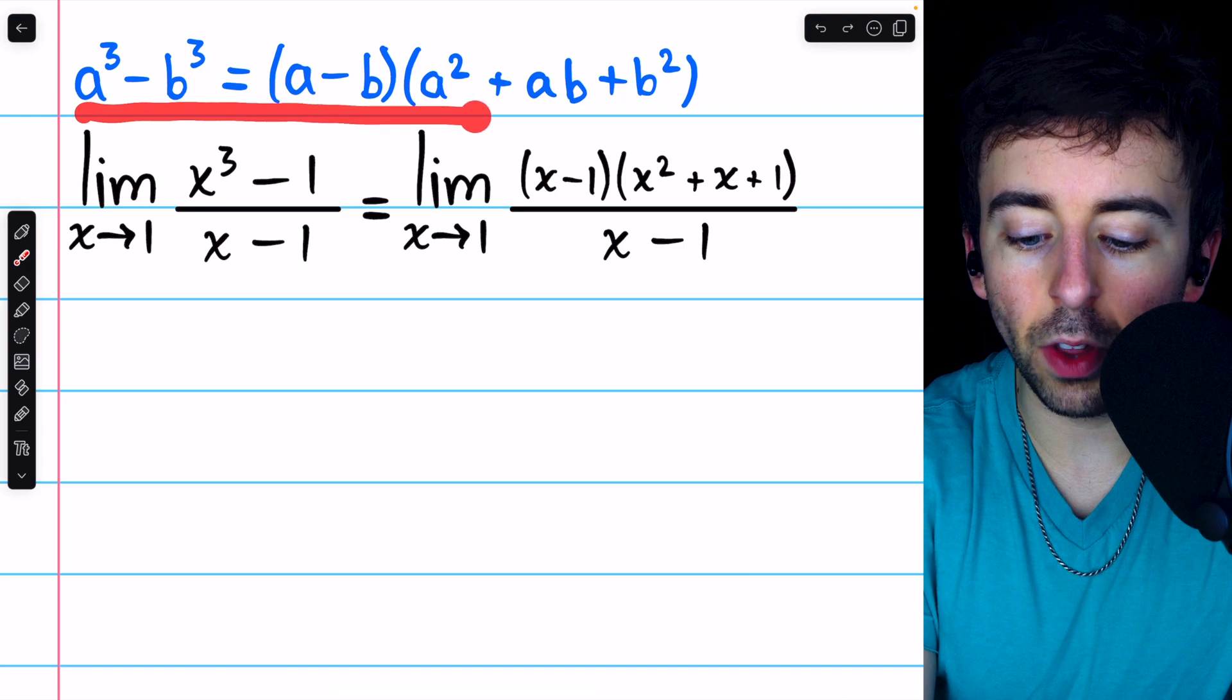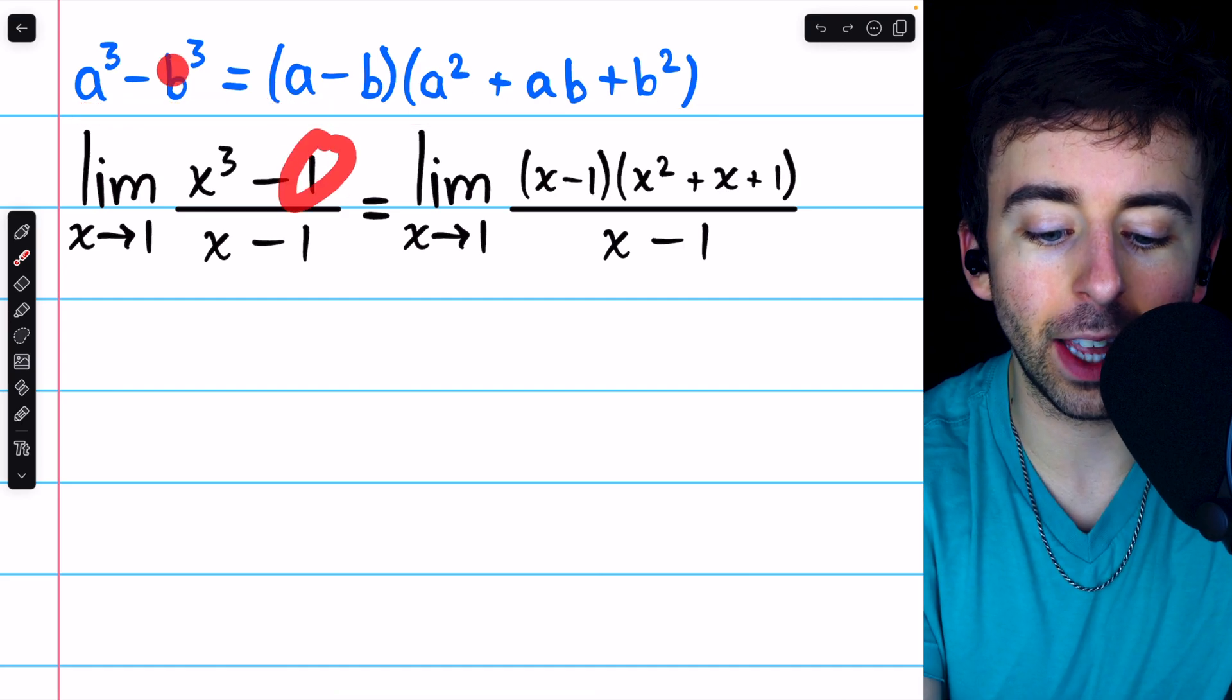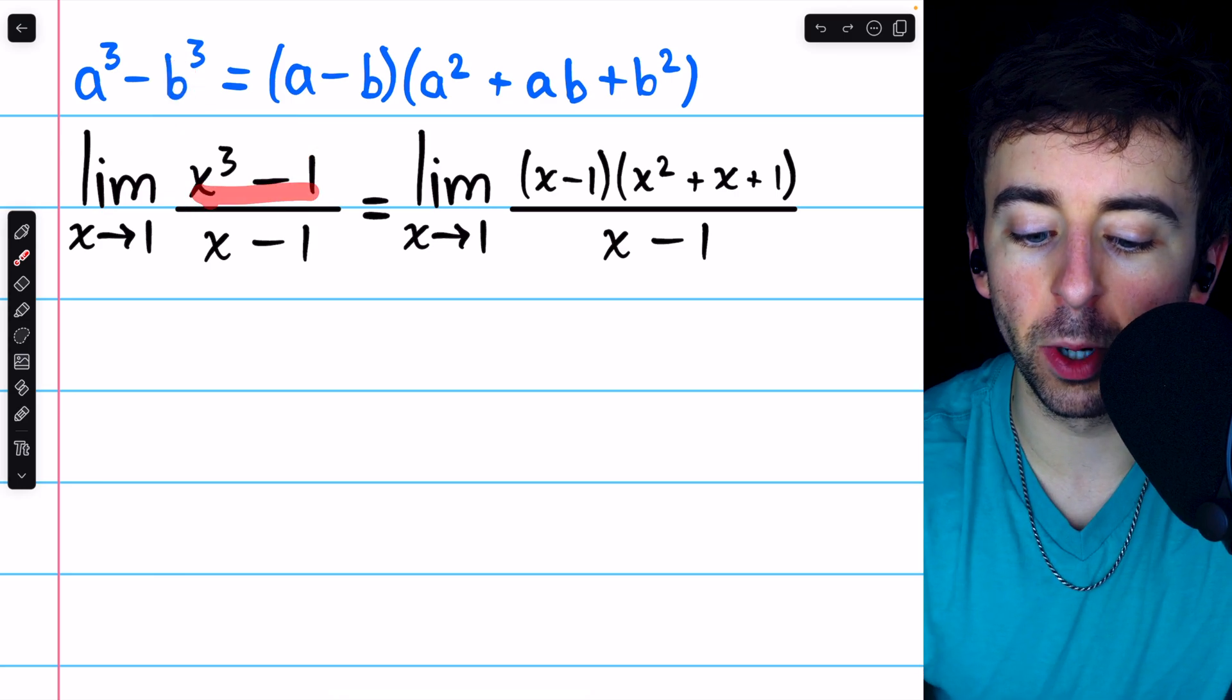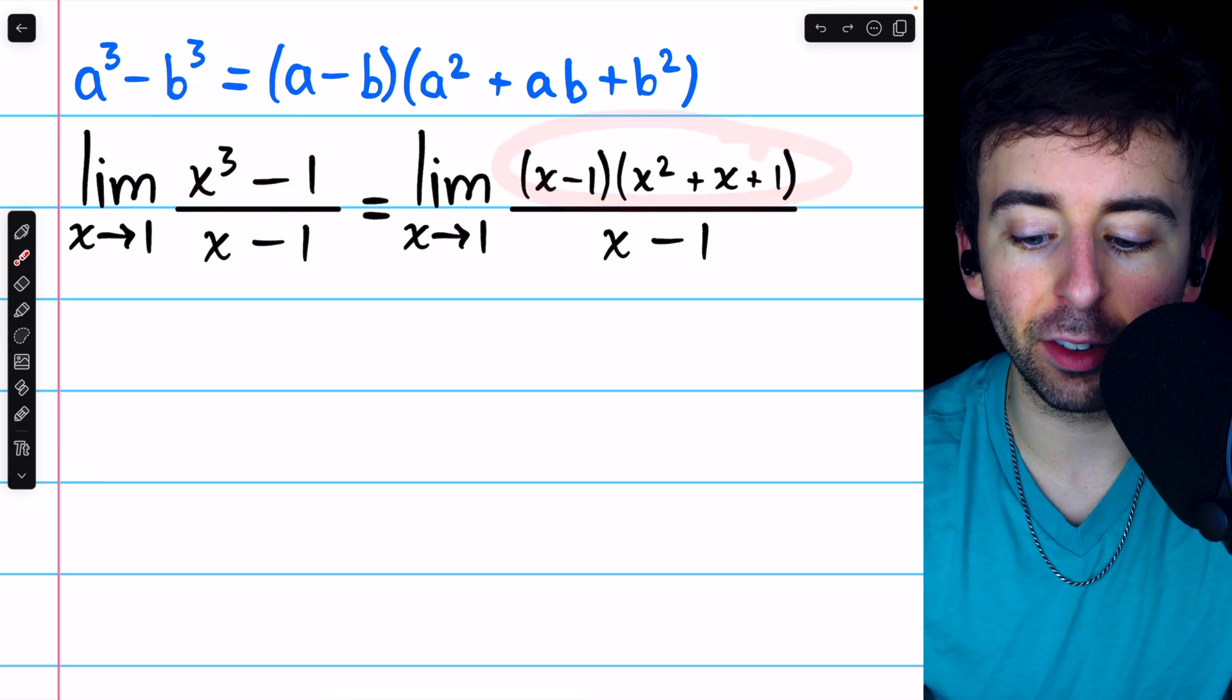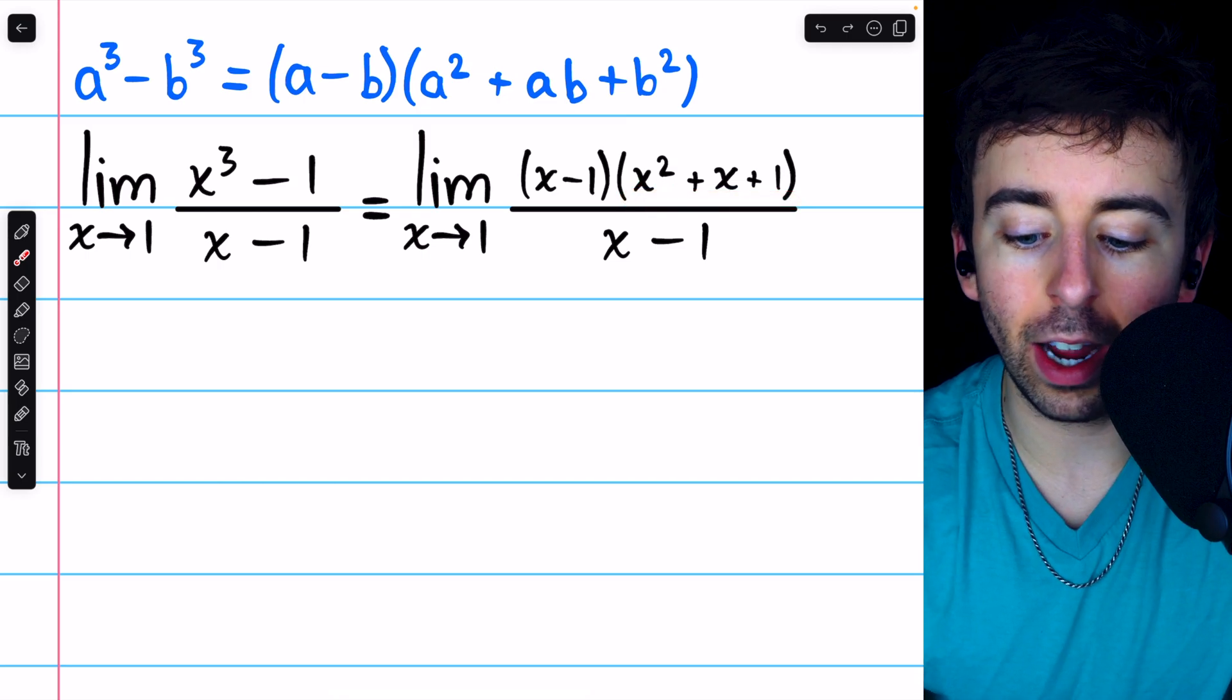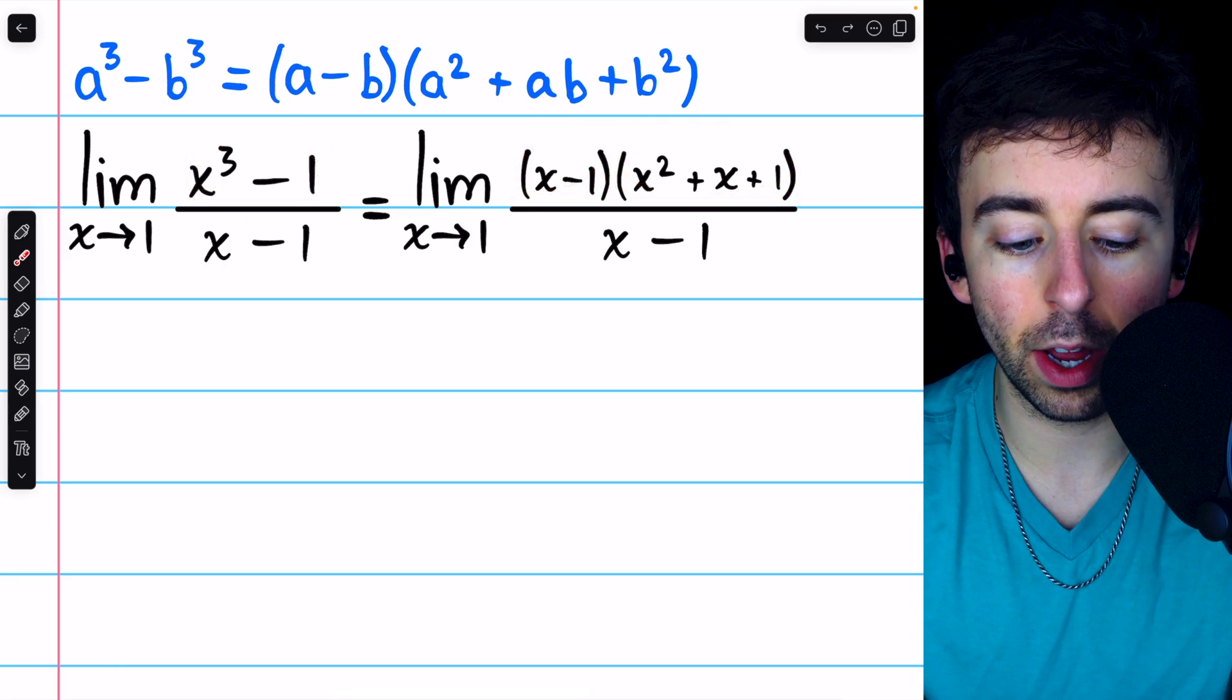So using this well-known factorization for a difference of cubes, noting that in our case b is 1, we can rewrite the numerator like this: x minus 1 times x squared plus x plus 1. You could check yourself that multiplying those factors together produces x cubed minus 1.